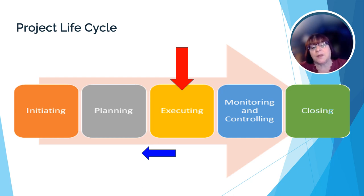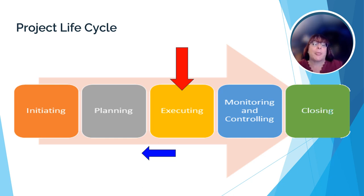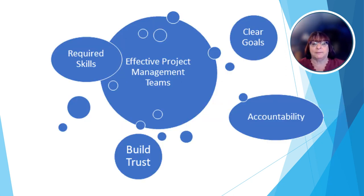Notice that there's also an arrow that goes back to planning, which means that we are going to go back to the planning stage — either to finish what we hadn't finished before we started the project, or to make adjustments to our original plan.